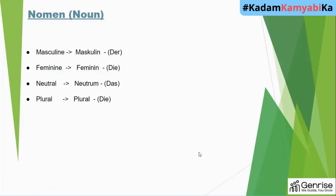A noun is called 'Nomen' in German. There are four articles in German: masculine, feminine, neutral, and plural. To denote masculine, we use the article 'der'. For feminine, it is referred to as 'die'.